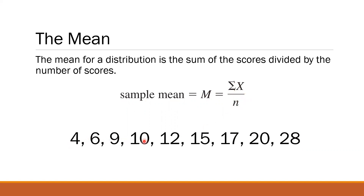To determine the mean for these numbers, we need to get the summation of all numbers X, divided by the number of given numbers. So to compute the mean, let's first determine the numerator — the summation of X — the total of 4, 6, 9, 10, 12, 15, 17, 20, 28. If you add all of them, the total is 121.